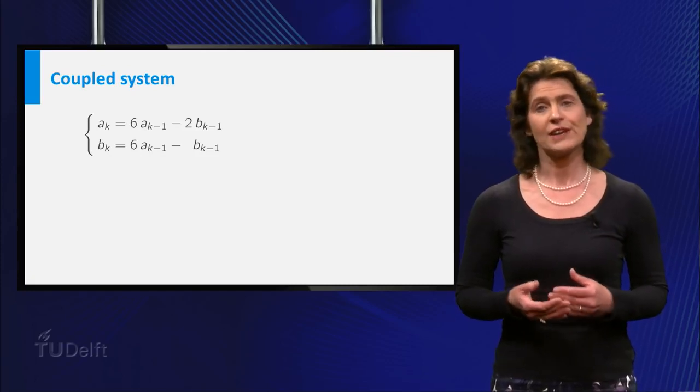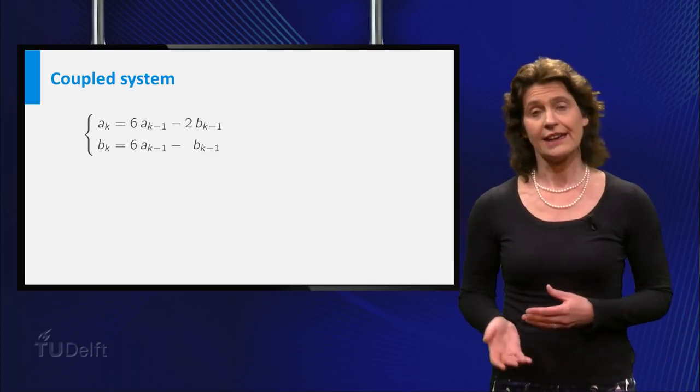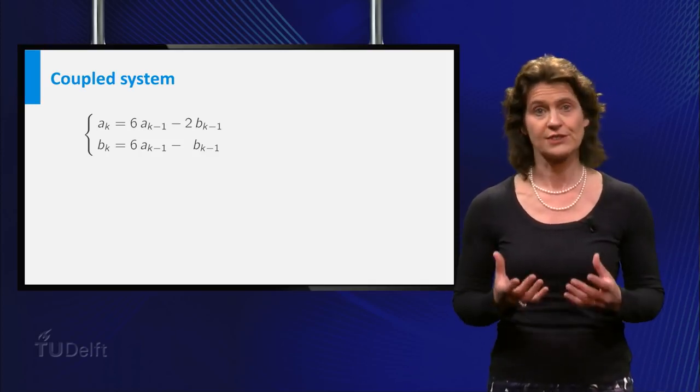Here you need both Ak-1 and Bk-1 to compute either Ak or Bk. This is called a coupled system.